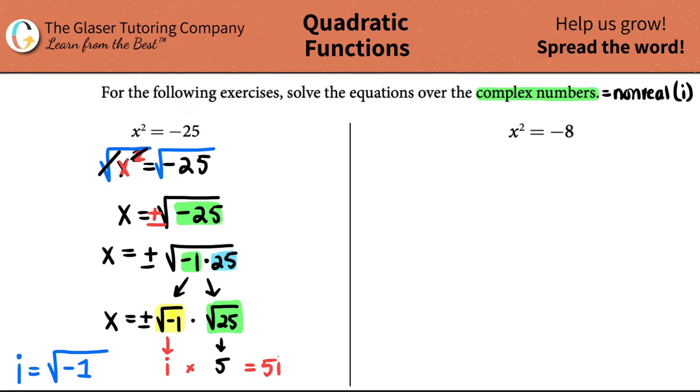But remember, it's positive or negative. So I have two answers here. My X value could either be a positive five I, or it could be a negative five I. You have two answers. And that's the answer for the first one.